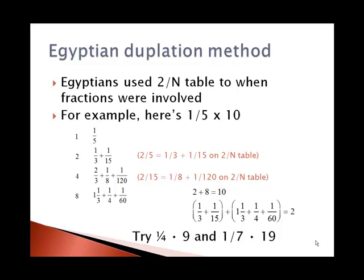When fractions were involved, the Egyptians used a table that had the Egyptian fraction expansions of 2 over n, where n was an odd number. For example, here's how they would do 1 fifth times 10. We start with 1 and 1 fifth. We double the 1 to get 2, and we double 1 fifth to get 2 fifths, which as an Egyptian fraction from their 2 over n table is 1 third plus 1 fifteenth.